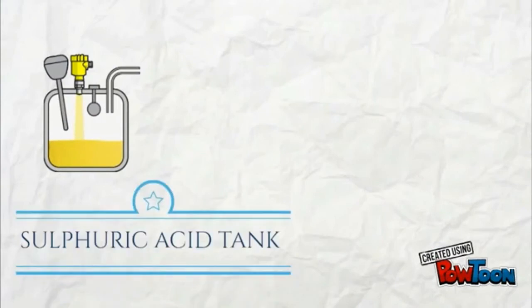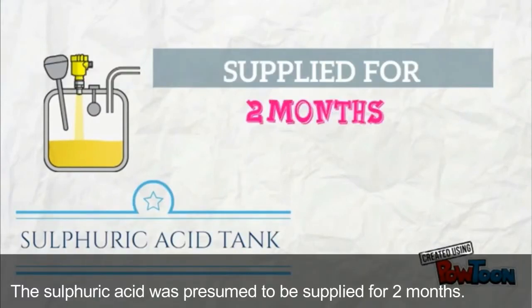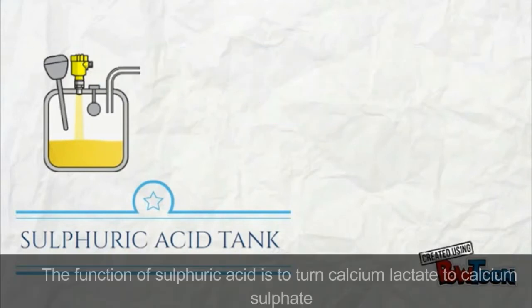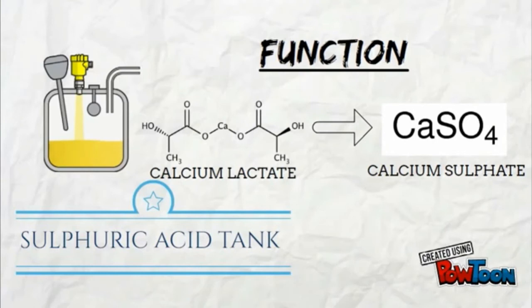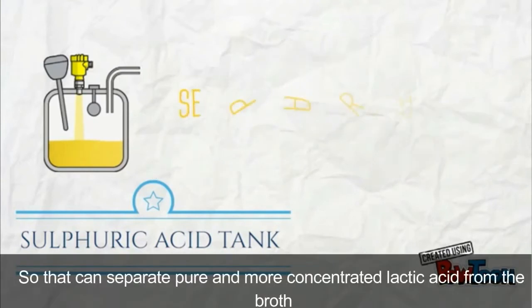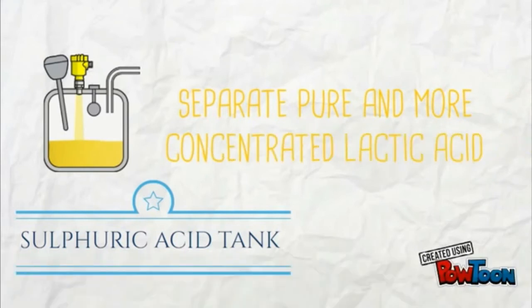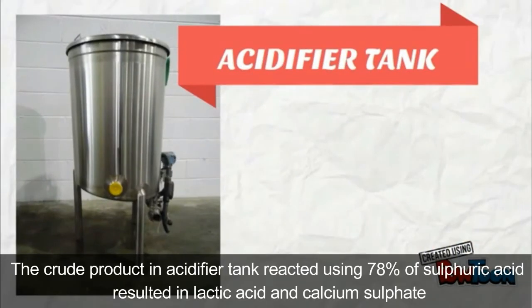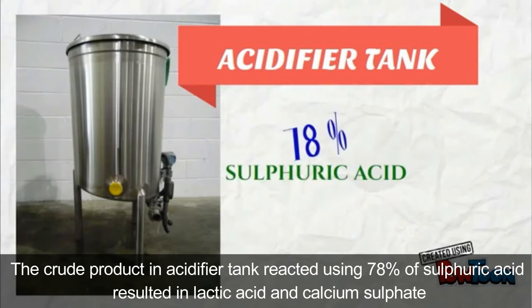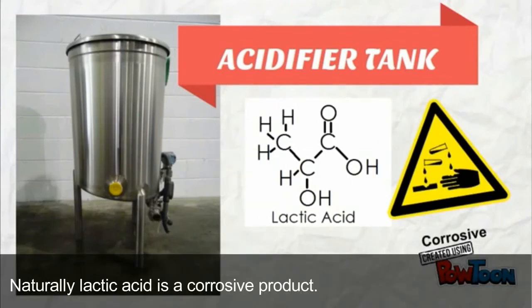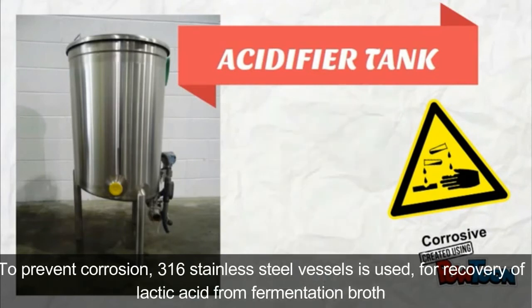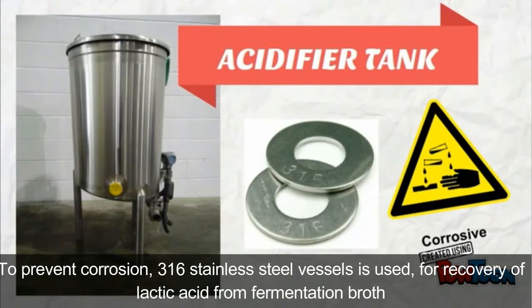Sulfuric acid tank: the sulfuric acid was presumed to be supplied for 2 months. The function of sulfuric acid is to turn calcium lactate to calcium sulfate so that it can separate pure and more concentrated lactic acid from the broth. The acidifier tank: the crude product in acidifier tank reacts using 78% sulfuric acid, resulting in lactic acid and calcium sulfate. Naturally, sulfuric acid is a corrosive product. To prevent the corrosion, 316L stainless steel is used for recovery of sulfuric acid from fermentation broth.